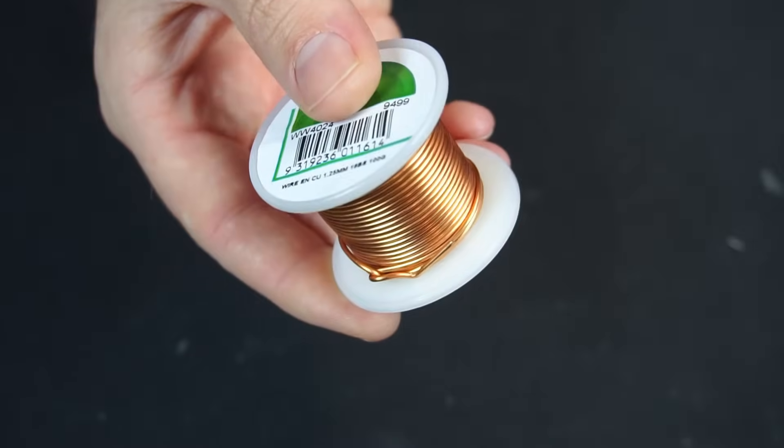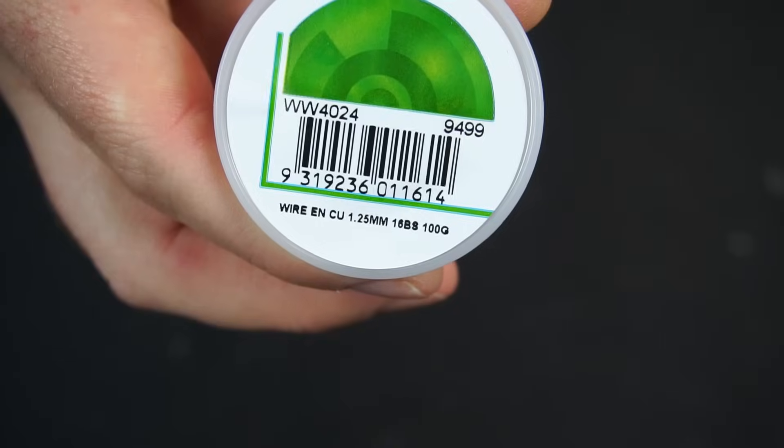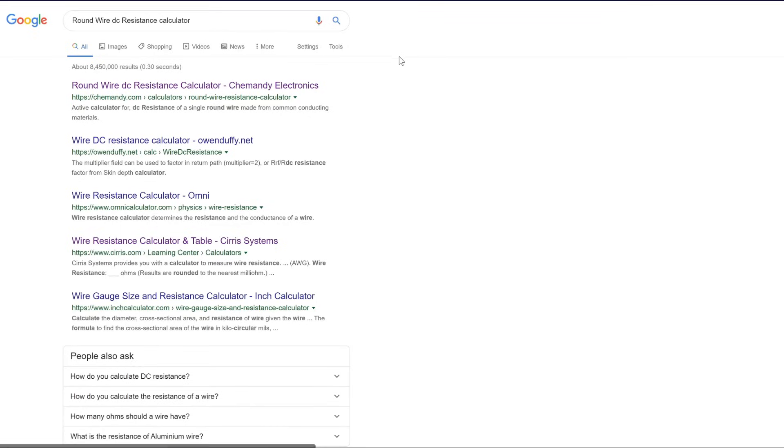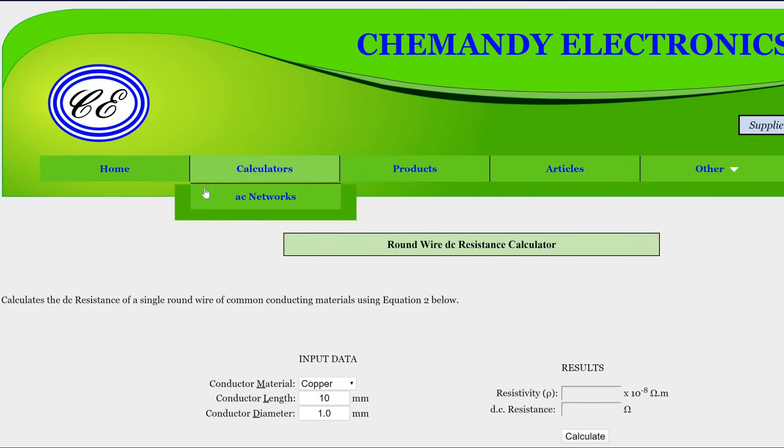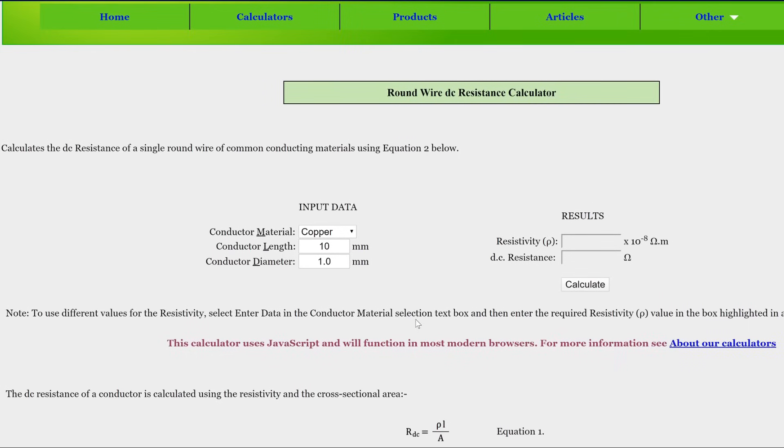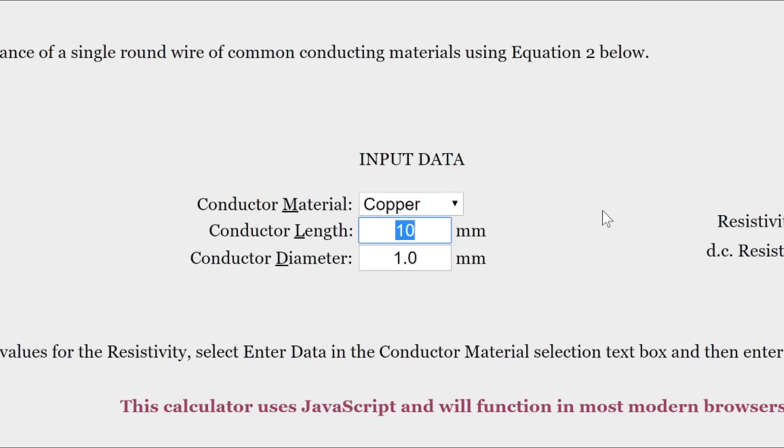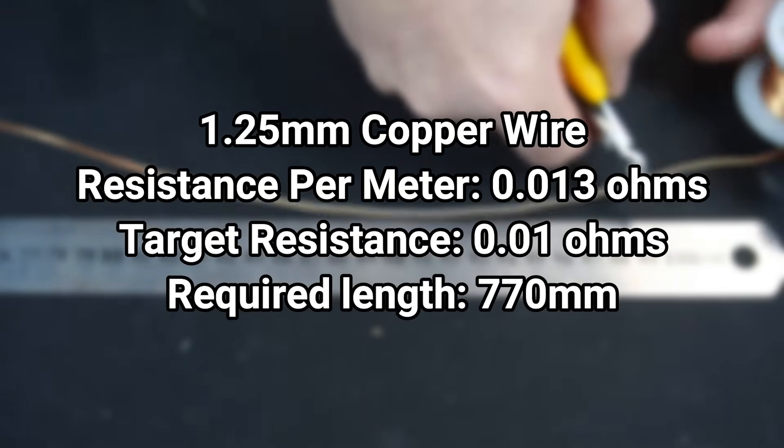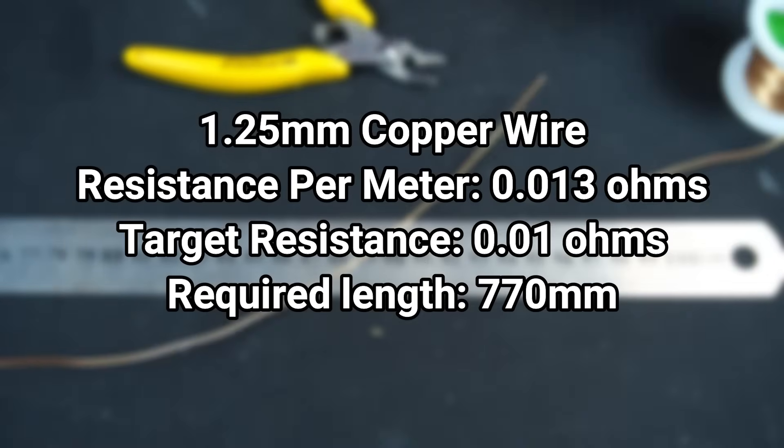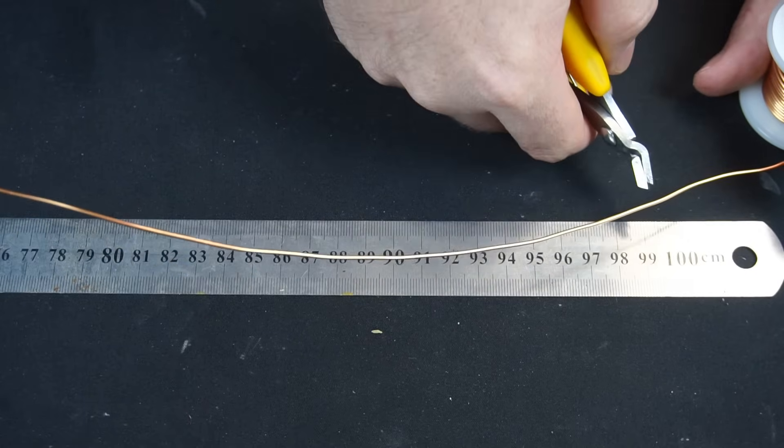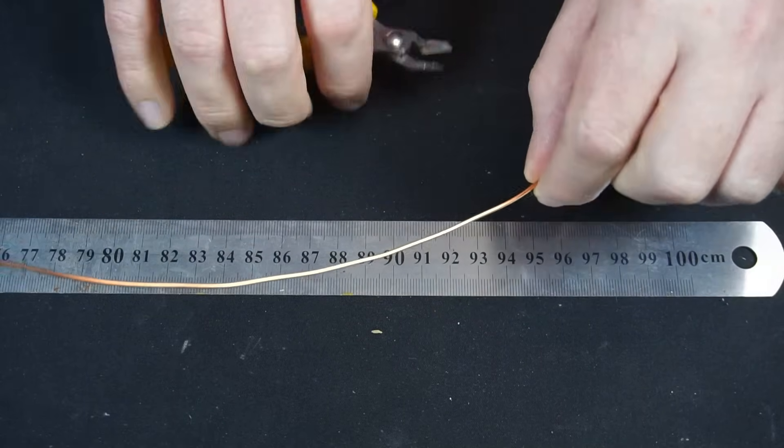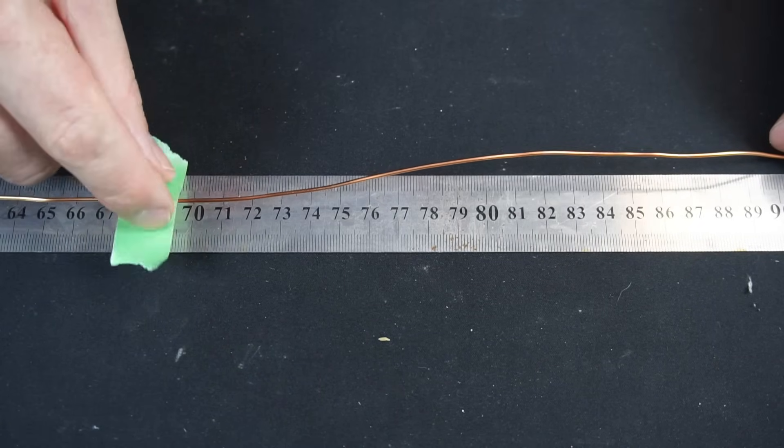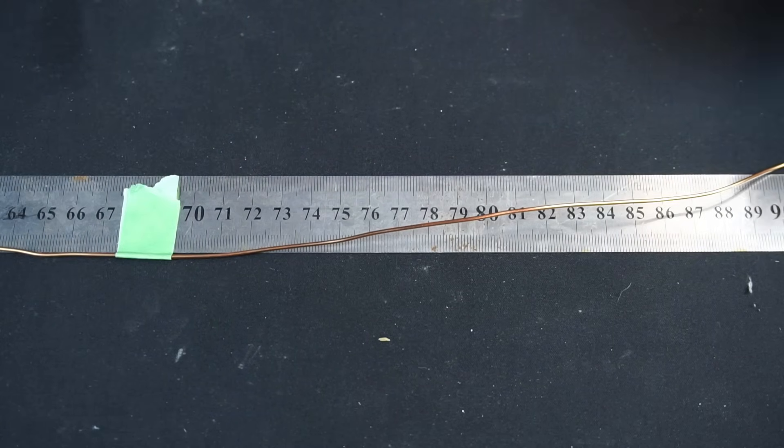I have a spool of 1.25 millimeter enameled copper wire I could use to make a shunt. I'll use this handy wire resistor calculator on commandy.com. I need to know the resistance per meter, so I'll enter in one meter for length and the wire diameter, which is 1.25 millimeters. And that calculates to be 13 milliohms per meter. So in theory, I'd only need around 770 millimeter length of wire to achieve a 10 milliohm resistance. So I'll cut a length slightly longer than I need to allow a margin for fine tuning.